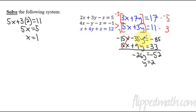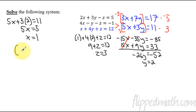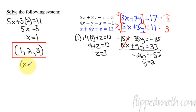I chose to use elimination, though you could have used substitution. Now we know y and x, so we use any of the original equations and plug in x and y to solve for z. Using the third equation: 1 plus 4 times 2 plus z equals 12, which gives 9 plus z equals 12, so z equals 3. We write our answer as a coordinate point: (1, 2, 3) in the form x, y, z.